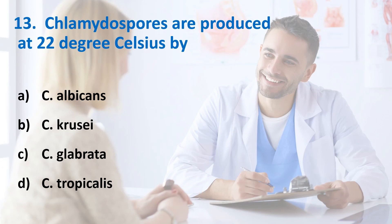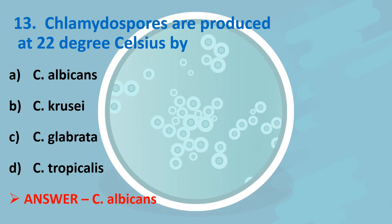Thirteenth question: Chlamydospores are produced at 22 degrees Celsius by? Options: Candida albicans, Candida krusei, Candida glabrata, Candida tropicalis. Answer is Option A, Candida albicans. Nutritionally deficient media like Cornmeal agar and Rice flour agar are used for chlamydospore synthesis, also known as Dalmau plate culture.